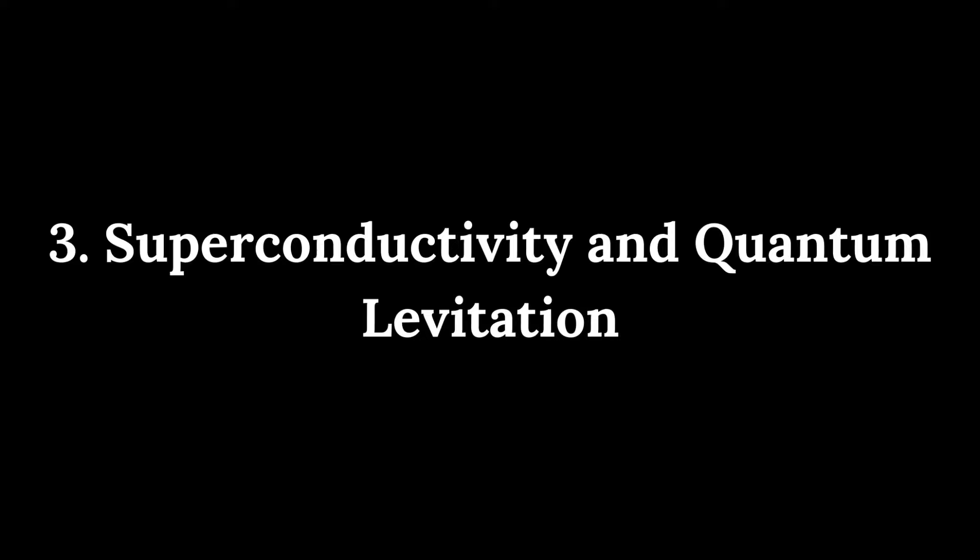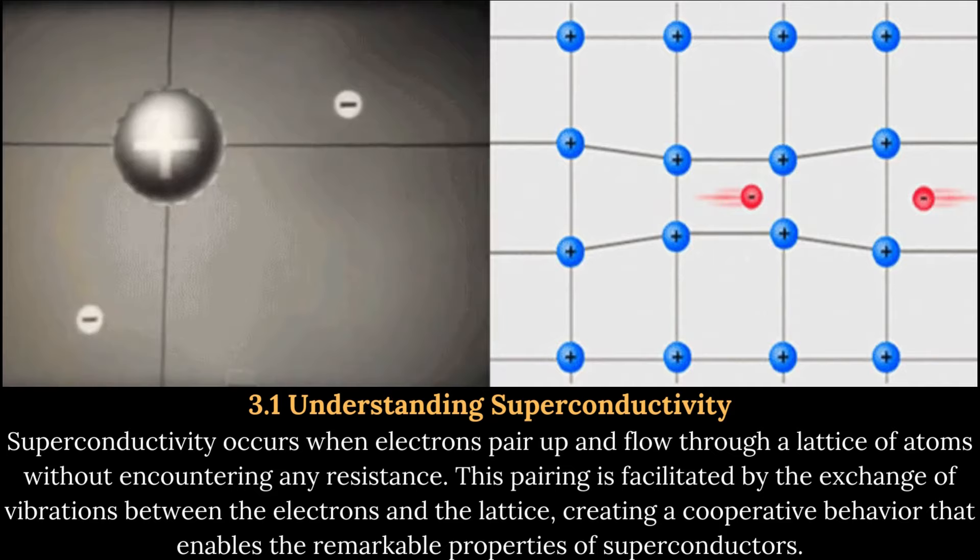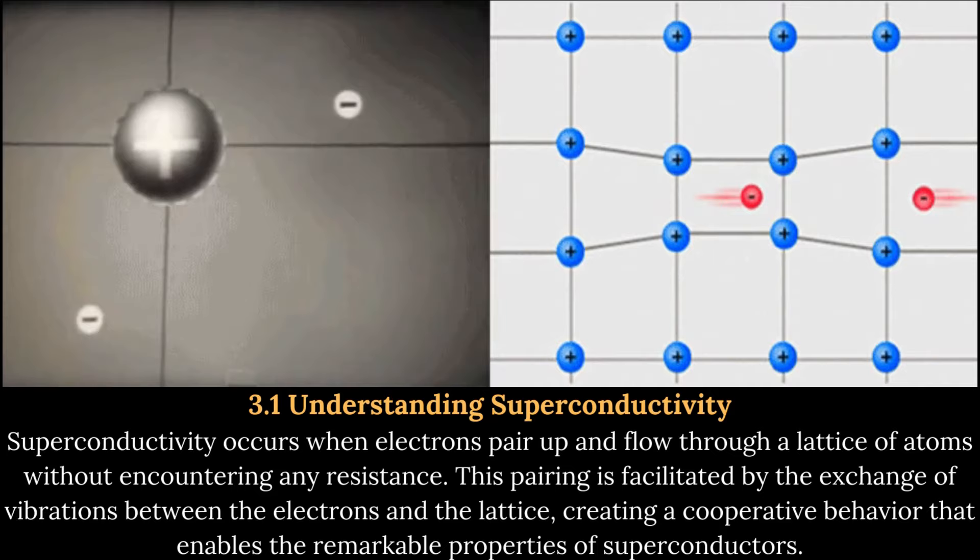Superconductivity and Quantum Levitation. Understanding Superconductivity: Superconductivity occurs when electrons pair up and flow through a lattice of atoms without encountering any resistance. This pairing is facilitated by the exchange of vibrations between the electrons and the lattice, creating a cooperative behavior that enables the remarkable properties of superconductors.